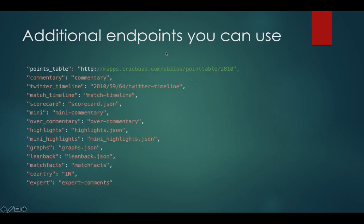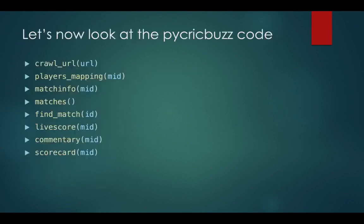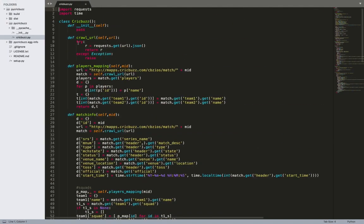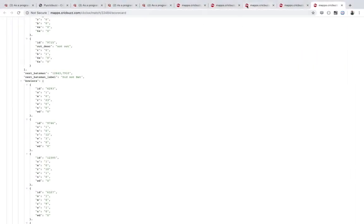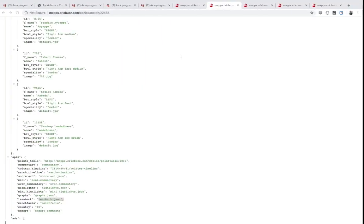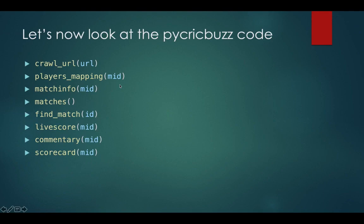I mentioned the additional endpoints you can use, such as commentary and scorecard, but there are other options you can try and find useful for building your own app — or you can develop a library better than mine or contribute to my source code. Now let's look at the PyCreckBuzz code. The crawl_url function just crawls the URL and returns the JSON response; it's a common function used by many of the other functions.